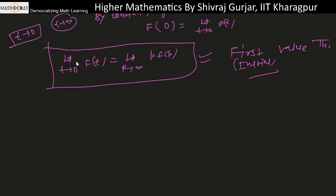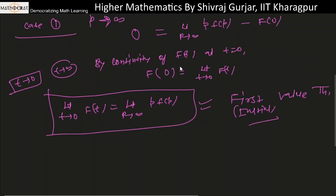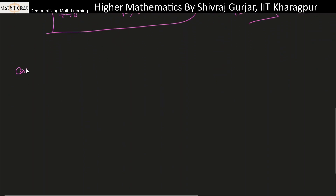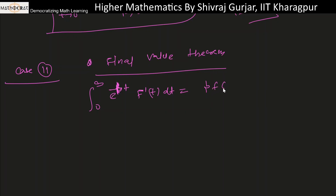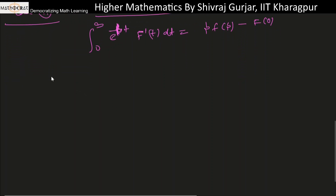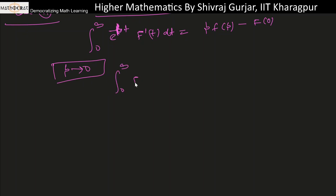This is the first value theorem. As a second value theorem, we can derive from this same expression. Case two gives us the final value theorem. Consider the integral from zero to infinity of e^(−pt)·f'(t) dt equals F(p) minus f(0), and take the limit as p tends to zero.